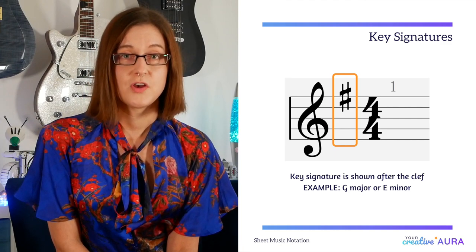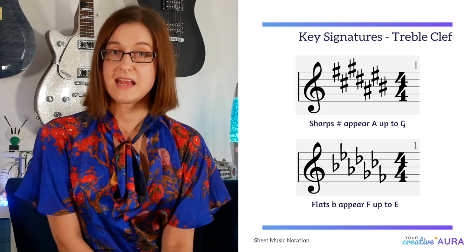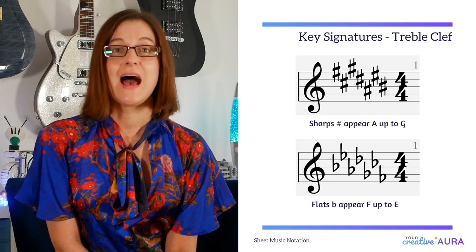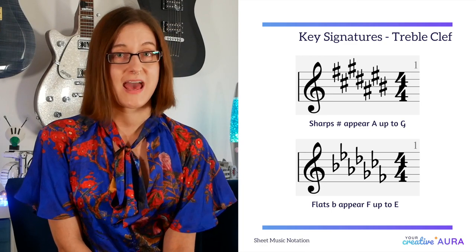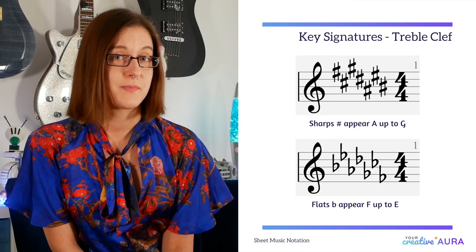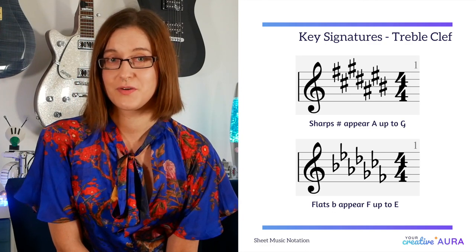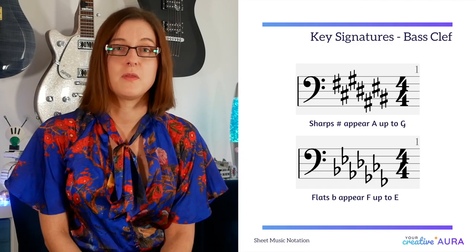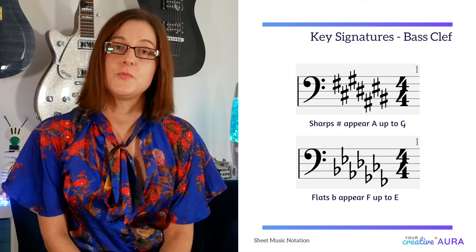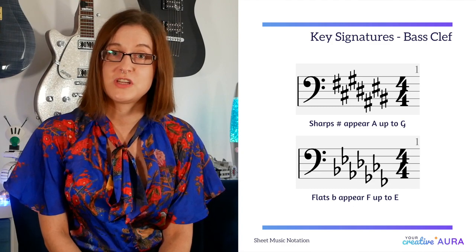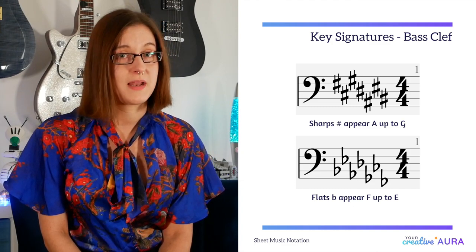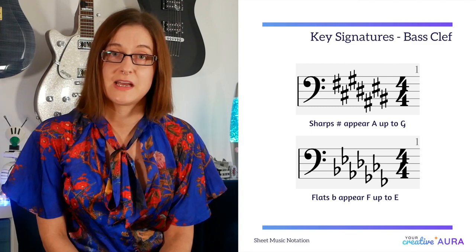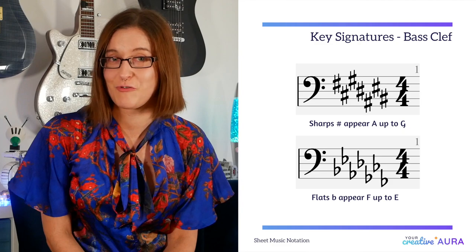For the treble clef, sharps are placed from the A space to the G space — A4 to G5. And flats are placed from the F space up to the E space — F4 to E5. For the bass clef, sharps are to be placed from the bottom A space up to the top G space — A2 to G3. And the flats are placed from the F space below the bottom line up to the E space — F2 to E3.